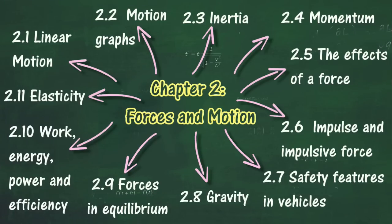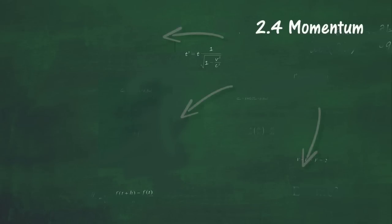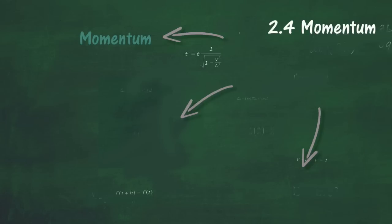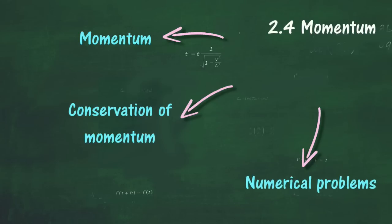In Section 2.4, we will learn about Momentum. At the end of this section, you should be able to: Define the momentum of an object, Define momentum as the product of mass and velocity, State the principle of conservation of momentum, and Describe applications of conservation of momentum. Solve Problems Involving Momentum.